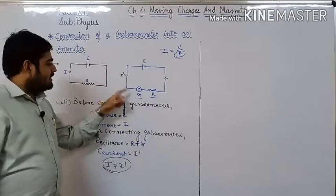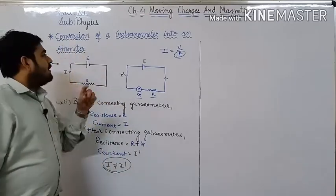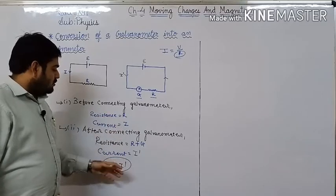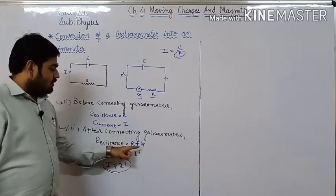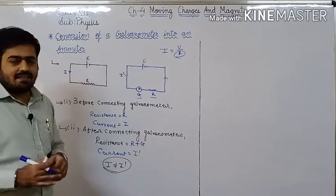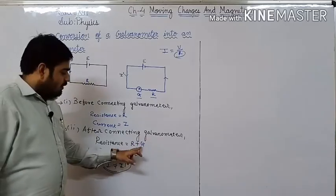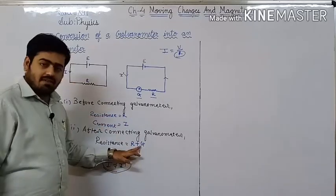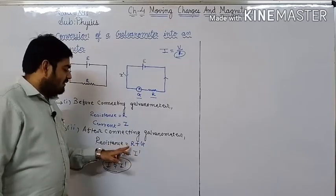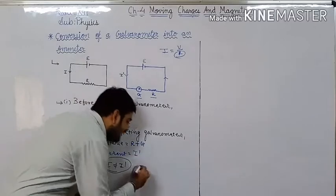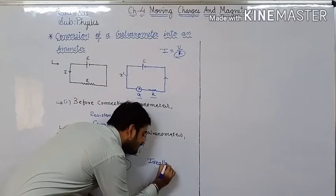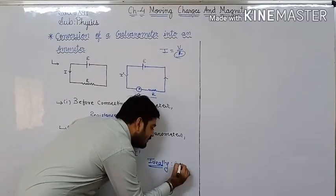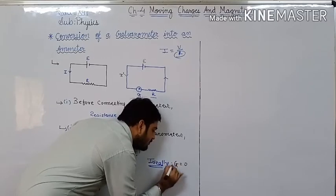So this difficulty we are facing during the conversion of a galvanometer into an ammeter. Now, if you want to solve this problem, then what should be the value of G? Here, value of G should be 0. If we minimize the resistance of galvanometer, then resistance of the circuit will remain R only. Ideally, or theoretically, value of G should be 0.